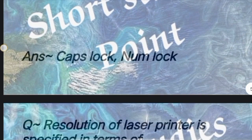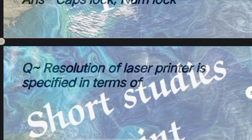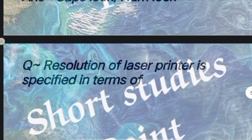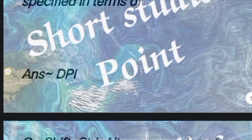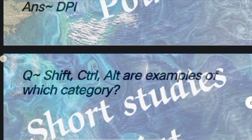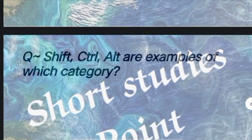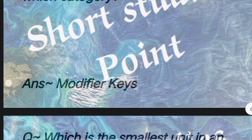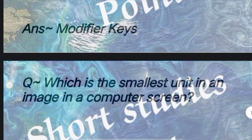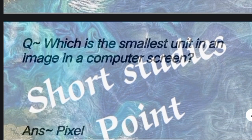Next question: Which key is also known as the dongle key? Answer: Caps Lock. Next question: Resolution of a laser printer is specified in terms of? Answer: DPI. Next question: Shift, Control, Alt are examples of which category? Answer: Modifier keys.